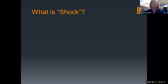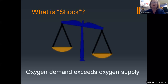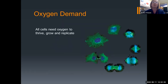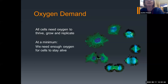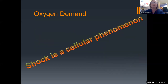I want to define what shock is. When you really think about the true definition of shock, it's oxygen supply and demand. It's when your body is demanding more oxygen than it can supply itself, leaving us in an anaerobic metabolism state. Every cell in our body needs oxygen in order to grow, thrive, and replicate. At the very minimum, our cells need enough oxygen to just stay alive and not break down. Because shock is actually a cellular phenomenon, shock is going to start long before we see the signs and symptoms that we assess for.